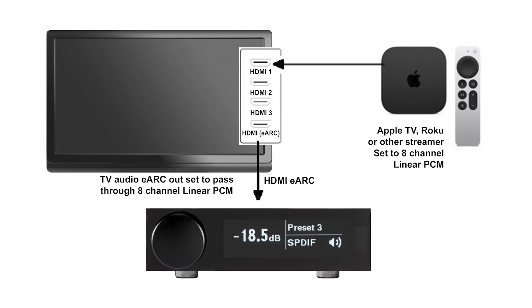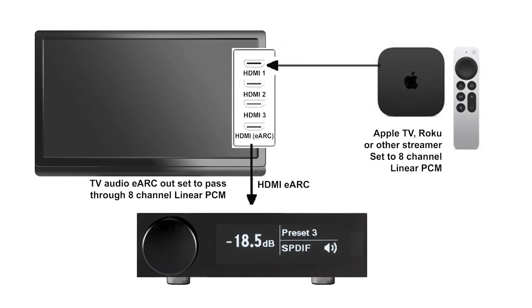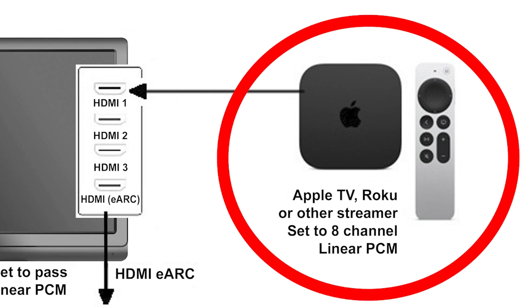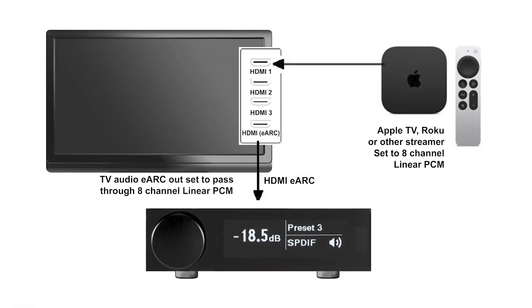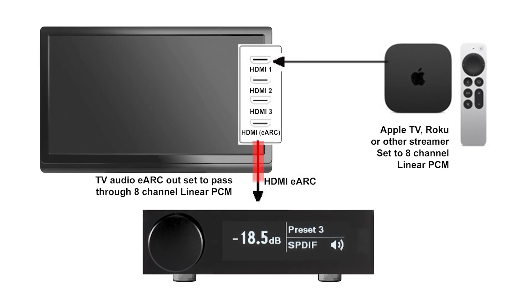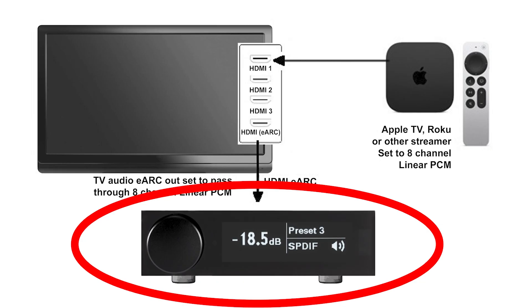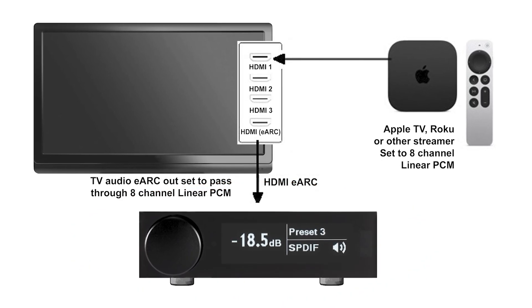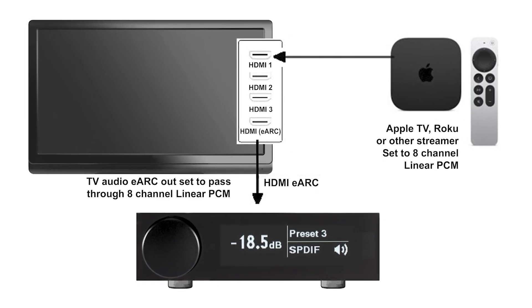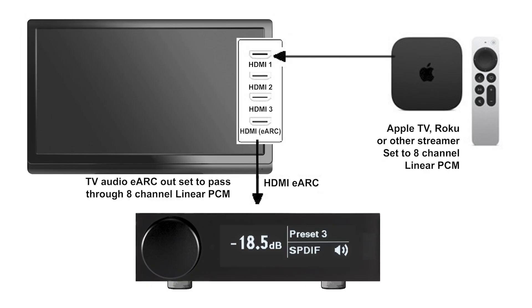This method uses sources that can decode DTS and Dolby into linear pulse code modulation, or LPCM, and are connected to the TV. Devices that can decode the bitstream include Apple TV, Lumen, Roku, and Oppo. In our example using Apple TV, we send the decoded LPCM to a smart TV. The TV then passes the LPCM via eARC to the MiniDSP FlexHT. From here, the FlexHT downmixes all of the audio content into 3.1 channels that are then sent to the amplifiers, speakers, and subwoofers.